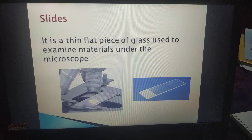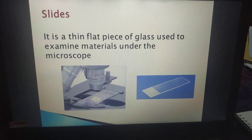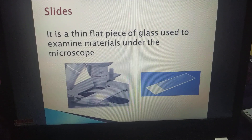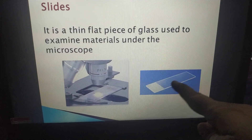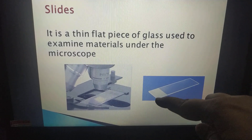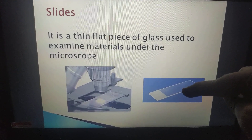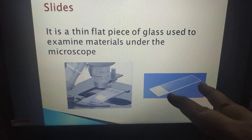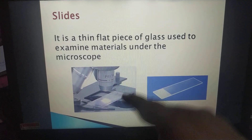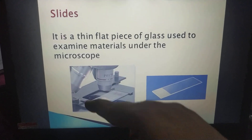Your class work is over. Now, what are slides? A slide is a thin, flat piece of glass used to examine material under the microscope. Here, a slip is pasted to write the name of whatever material is kept on the slide if we are making a permanent slide. This is the stage of the microscope where the slide is placed. These are the stage clips, which help to hold the slide properly.